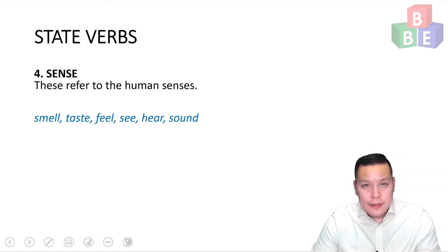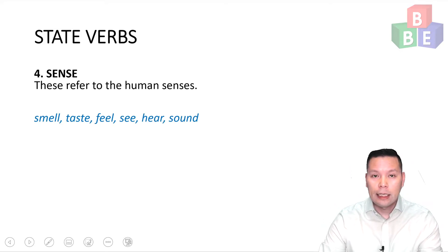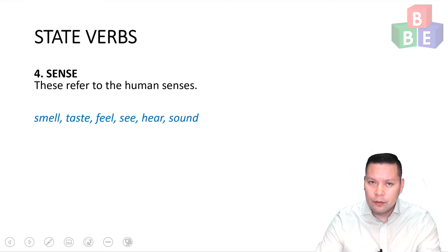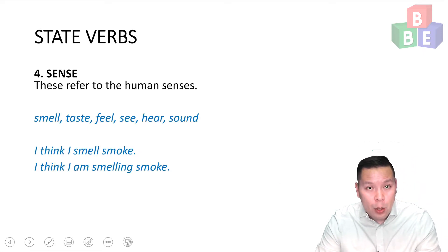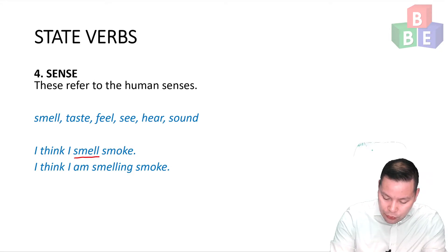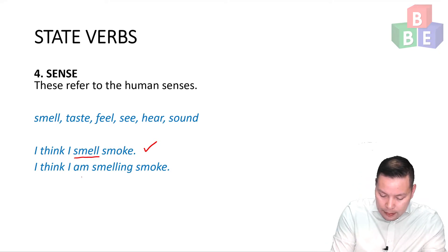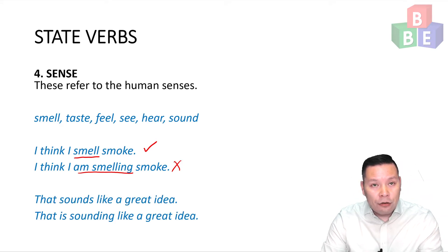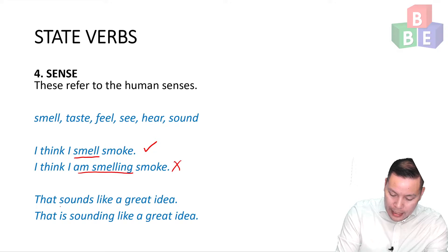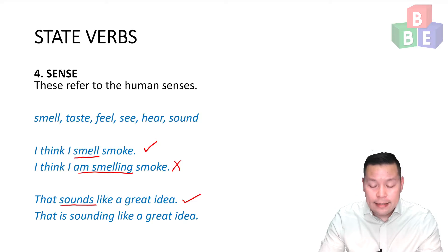The final group of state verbs is sense. These refer to the human senses — for example, smell, taste, feel, see, hear, sound. This is quite a small group. For example: I think I smell smoke — smell is a state verb and this is correct. I think I am smelling smoke — this is incorrect. Another example: That sounds like a great idea — sounds is correct. That is sounding like a great idea — this is incorrect.